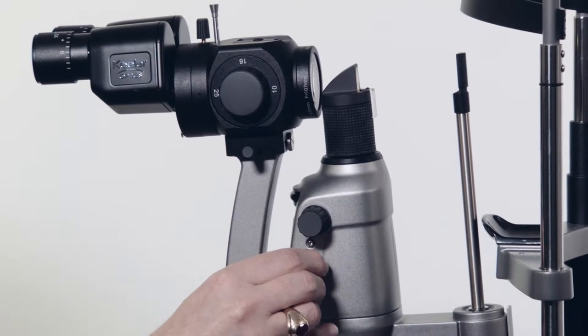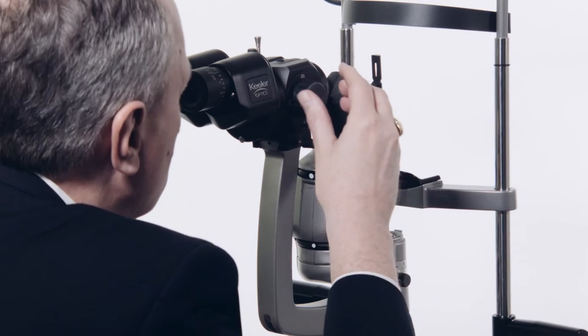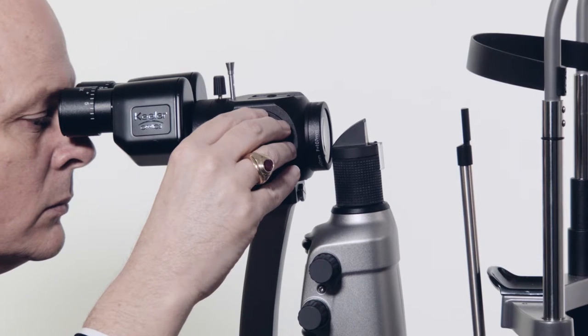Adjust the slit width using this adjuster. Slit width ranges from 1 to 14mm. Magnification is adjusted using the 3- or 5-step drum here.